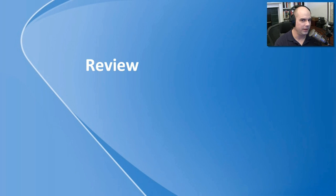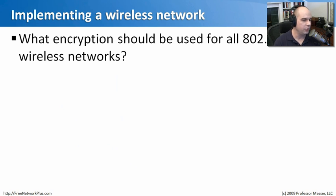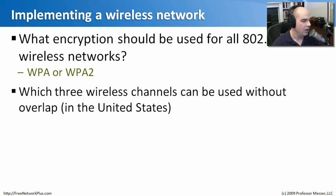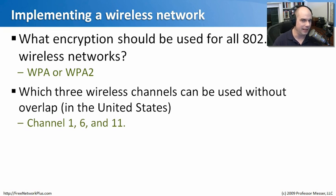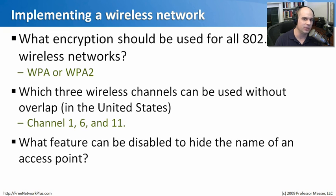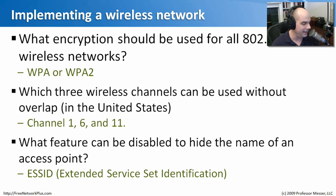Now that we've put together our wireless network and configured clients, let's review what we've learned. What encryption should be used for all 802.11 wireless networks? It's WPA or WPA2 — as long as it has those letters WPA inside of it, you'll be in good shape. Which three wireless channels can be used without overlap in the United States? Channels 1, 6, and 11 — the big three for configuring access point channels. And what feature can be disabled to hide the name of an access point? The answer is to hide the ESSID beacons — the Extended Service Set Identification beacons.